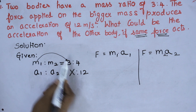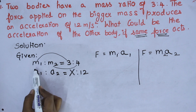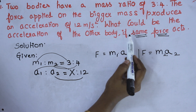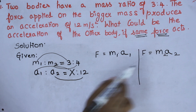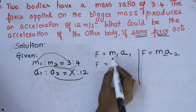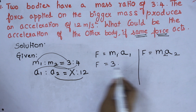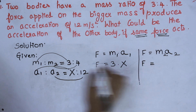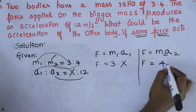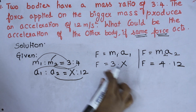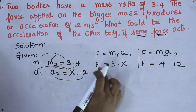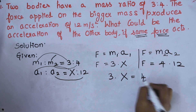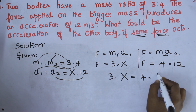The value of M1 is 3, M2 is 4. A1 is the unknown value X which we have to find, and A2 is 12. Since they clearly said same force, F is common — we should not write F1 and F2 separately. Substituting: 3 into X equals 4 into 12. So 3X = 48.